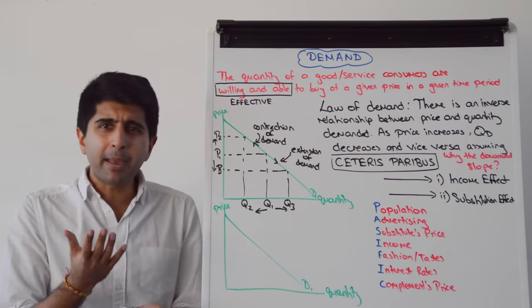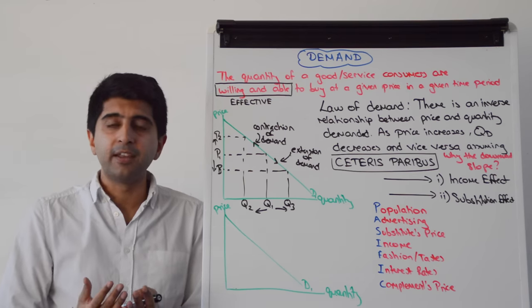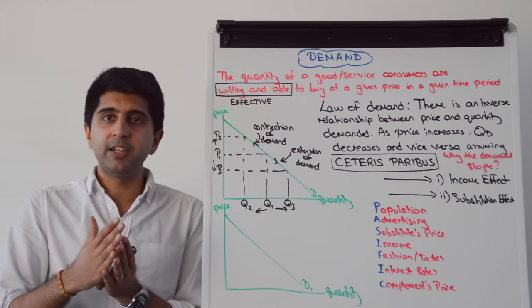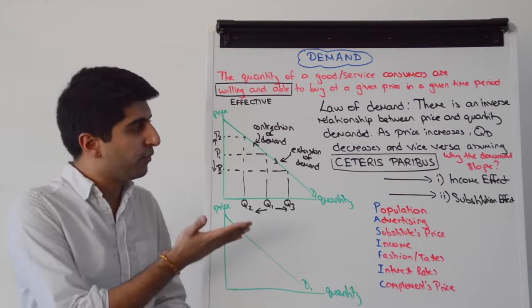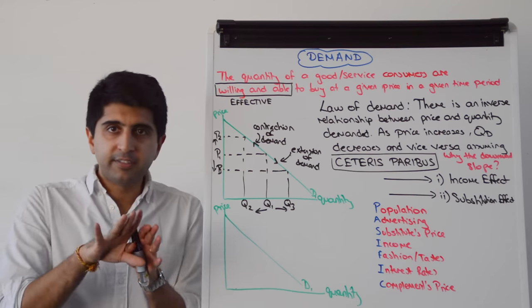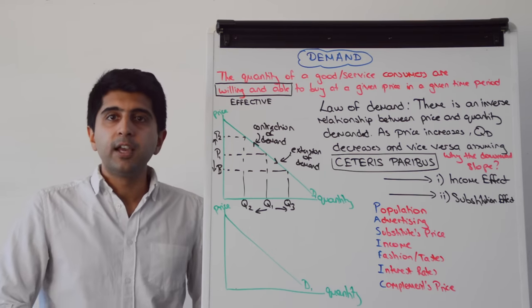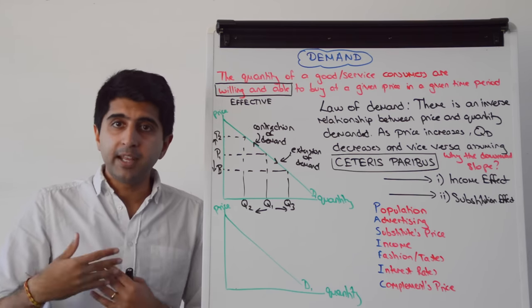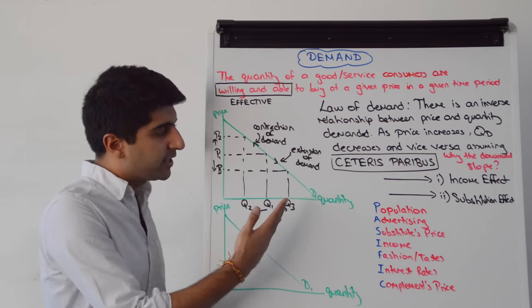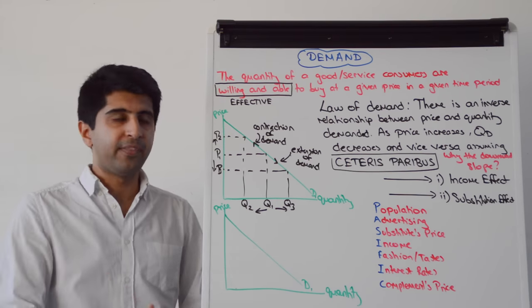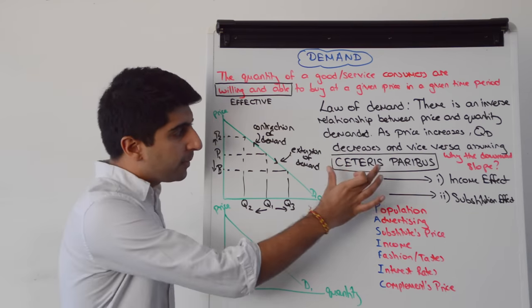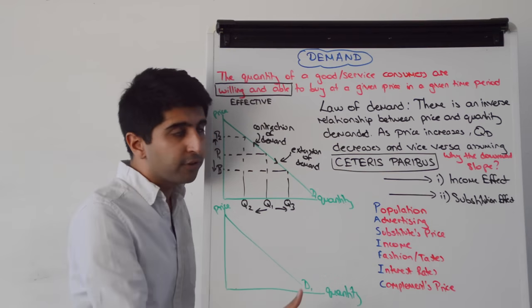So we understand the basic law of demand. When price increases, quantity demanded decreases — it contracts and we move up the demand curve. If price decreases, quantity demanded increases — it extends and we move down the demand curve. That's the basic law of demand: the inverse relationship, assuming Ceteris Paribus.